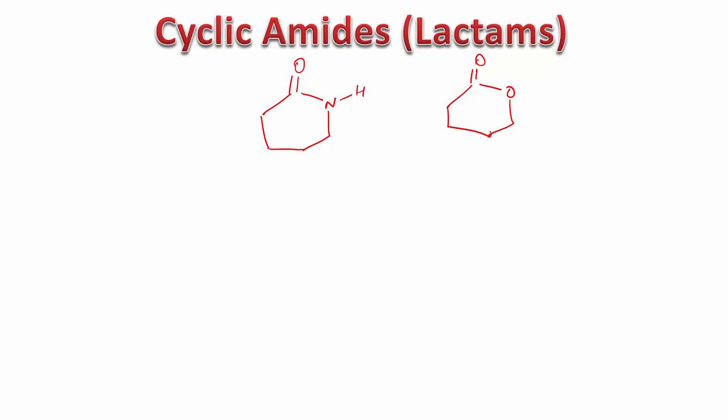The similarity doesn't end there. We also have the naming which is pretty similar to that of a cyclic ester. Remember how we did cyclic esters? Check back on the previous videos. You'll find a separate video on the naming of cyclic esters. What we did with cyclic esters was name it as a derivative of cyclic ketone, and this ether-type oxygen was treated like an ether-type ring oxygen. We used to call it oxa.